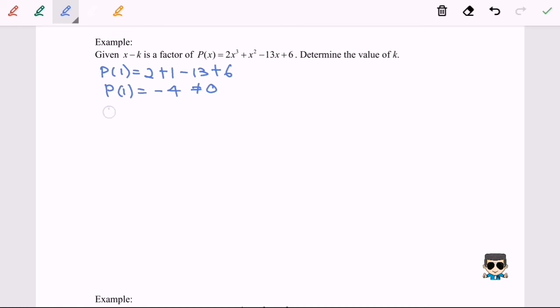Now we are going to try another value which is equal to 2. When we substitute the value equals to 2, we will have 2 multiplied with 8 plus 4 minus 26 plus 6. We will have 20 minus 26 plus 6, so finally we will have equals to 0.